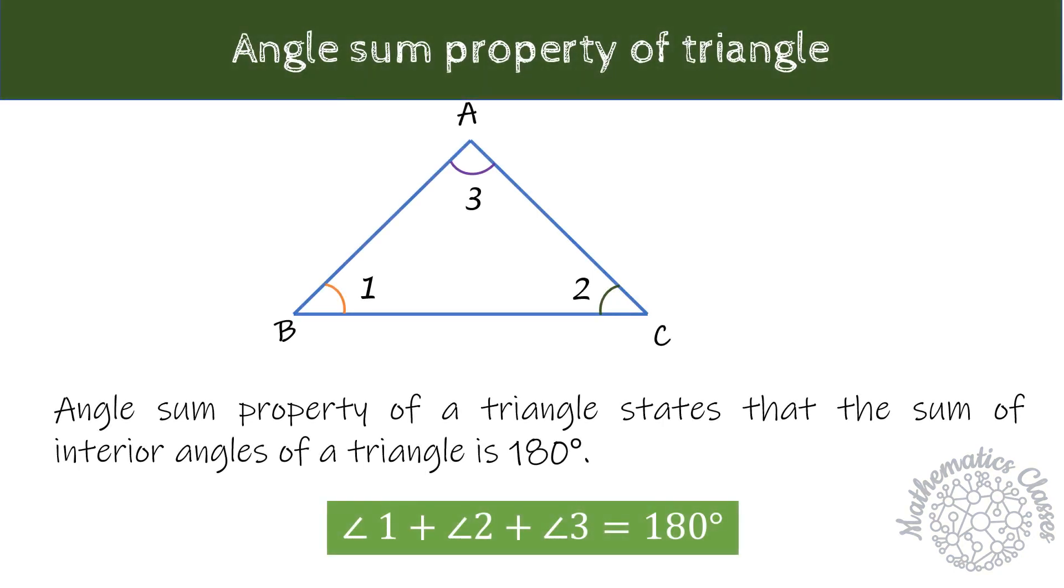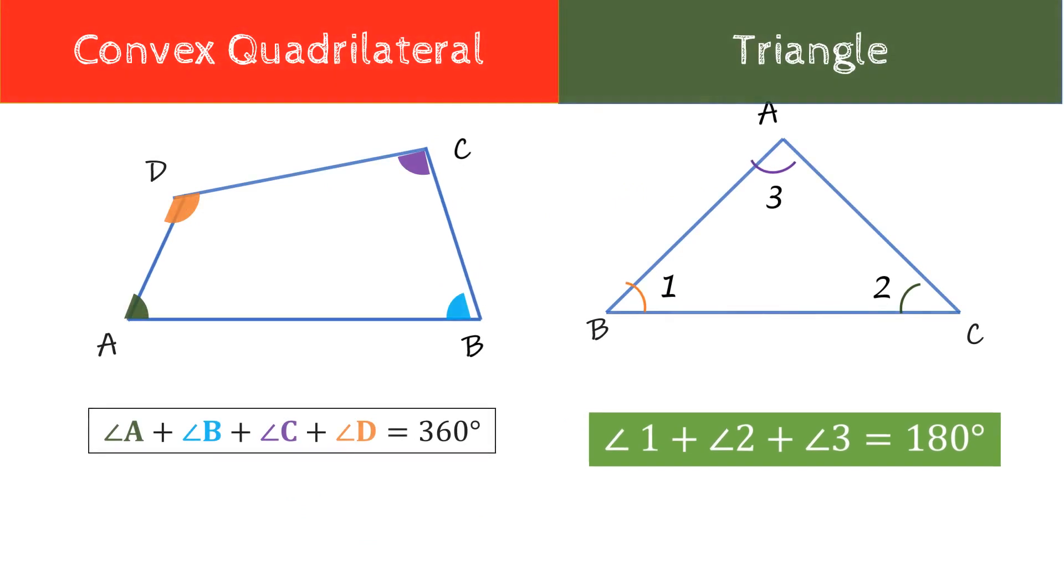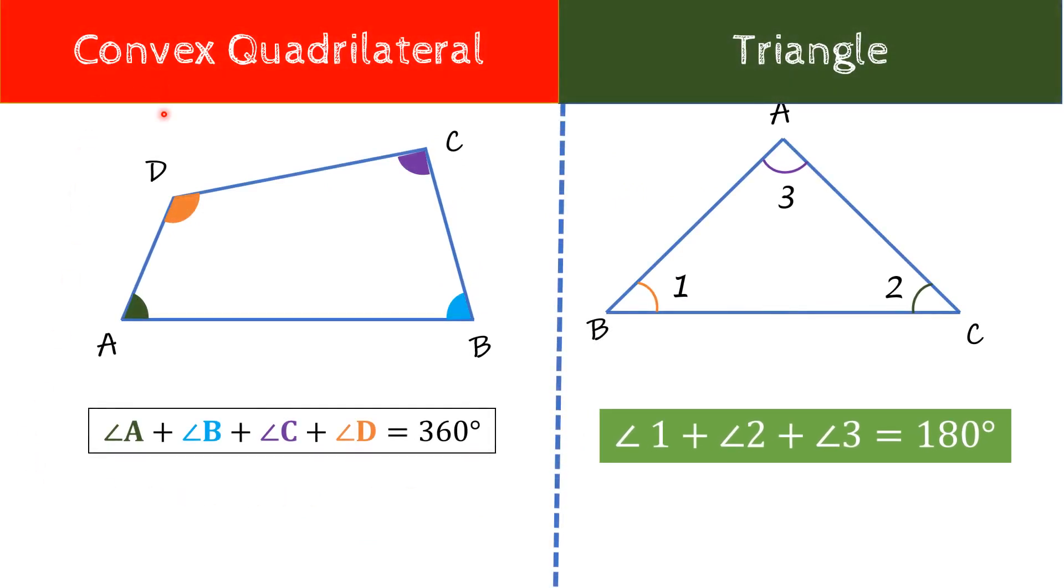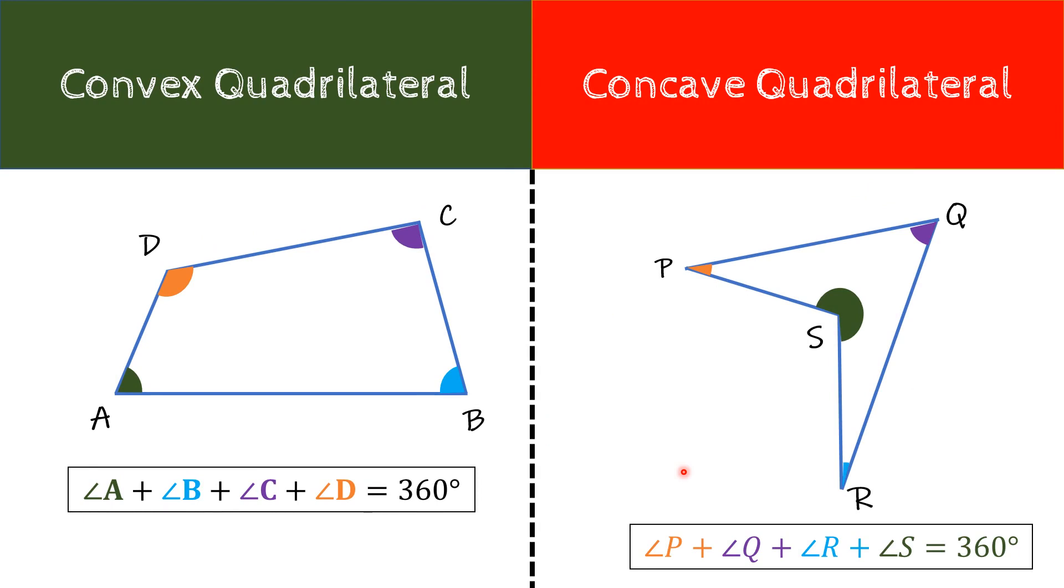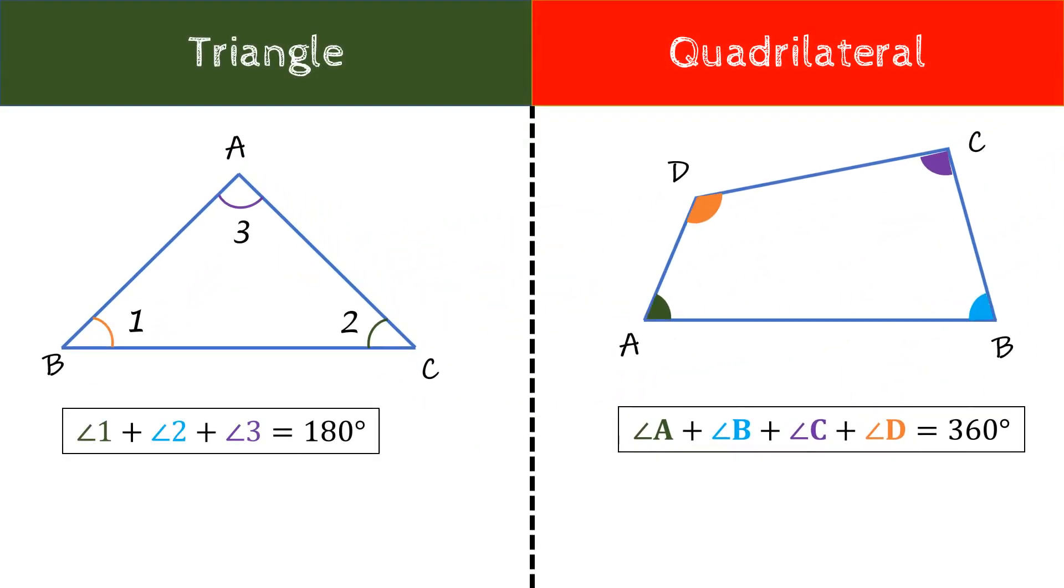In the previous lecture, we have already proved that the sum of a triangle is always 180 degrees. We have also proved for a convex quadrilateral that sum of its all interior angles is always 360 degrees. Moreover, this angle sum property is true for a non-convex quadrilateral or a concave quadrilateral as well. Concave quadrilateral में भी अगर हम सभी interior angles का sum करें, तो हमें 360 degrees ही मिलेगा.